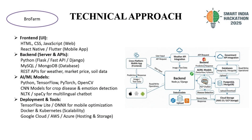For the technical approach of Brofarm AI, the front-end uses HTML, CSS, and JavaScript for the web application, while the mobile application is developed using React Native or Flutter. The back-end uses Python frameworks like Flask, FastAPI, or Django, and the database is stored using MySQL or MongoDB.